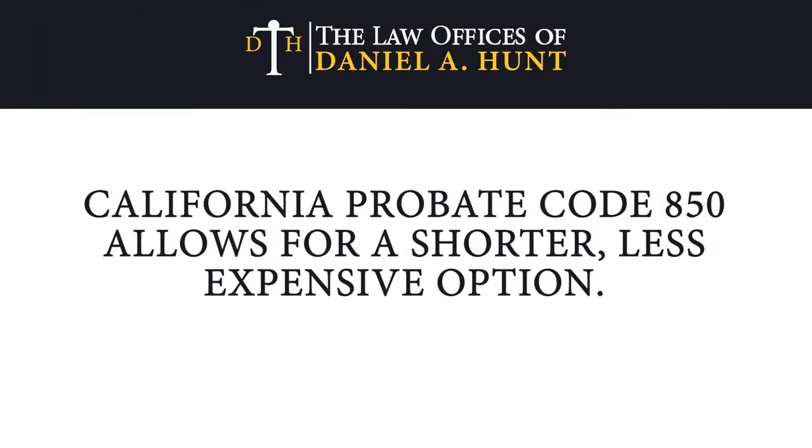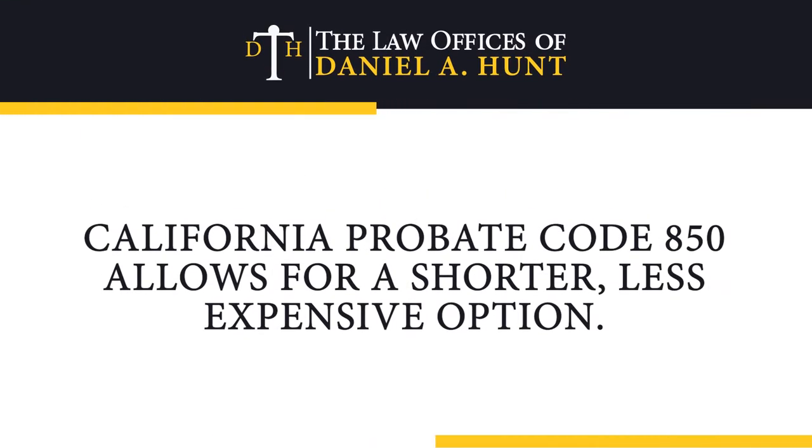Normally, a trustee or beneficiary would need to open a probate in order to distribute or inherit the omitted asset. Fortunately, California Probate Code 850 allows for a shorter, less expensive option: filing a petition with the court to reclaim the property back into the trust. If the court grants the petition, the petitioner will receive a court order declaring the property as a trust asset.